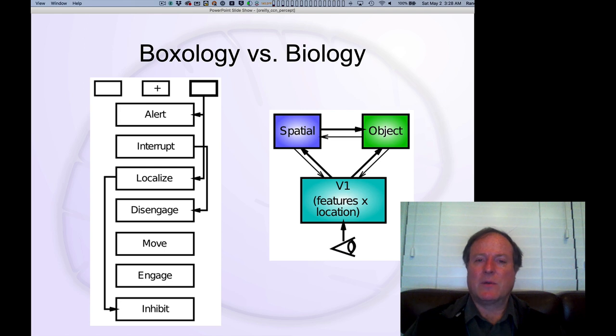And Posner, as was typical of many researchers in his generation, proposed a classic kind of cognitive psychology model for this task involving a series of discrete cognitive operations like alerting and interrupting and localizing. And these were just kind of logical steps that you might need to do if you were to write a computer program.